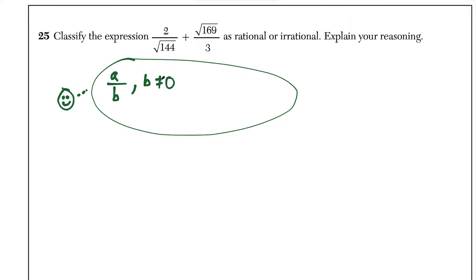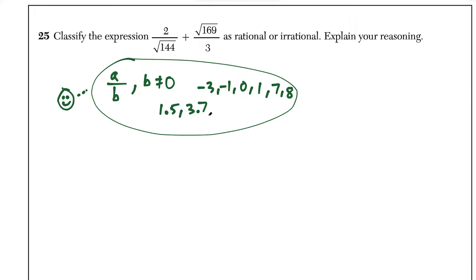An easier way to understand this is just to think of some rational numbers. Rational numbers include integers like negative 3, negative 1, 0, 1, 7, 8, and so on. Integers all count as rational numbers. Other numbers that count would be terminating decimals like 1.5 or 3.7. You could also have infinite decimals as long as there's a pattern to them — for example, 5.2828 repeating is rational because there's a pattern to that infinite decimal.